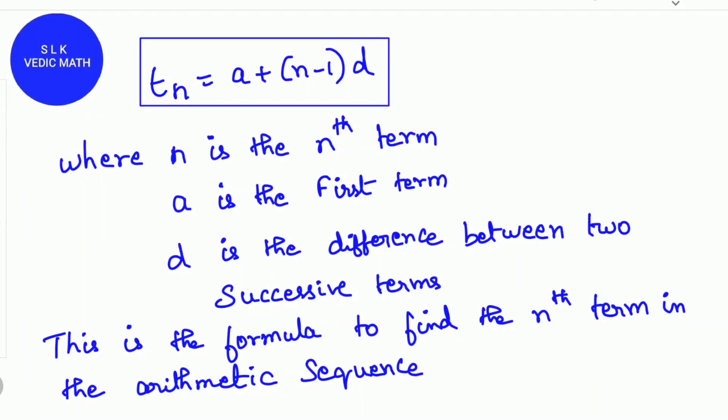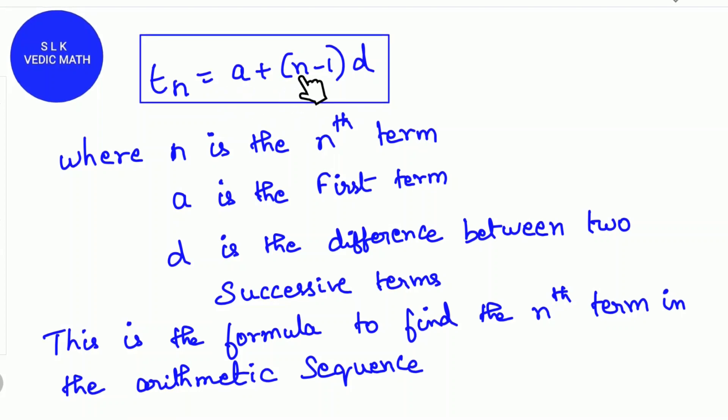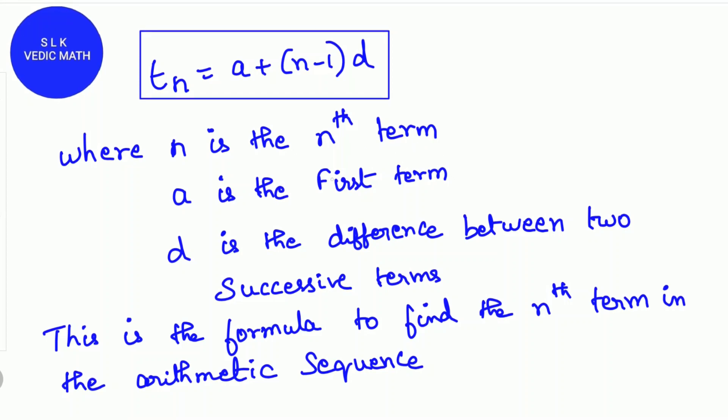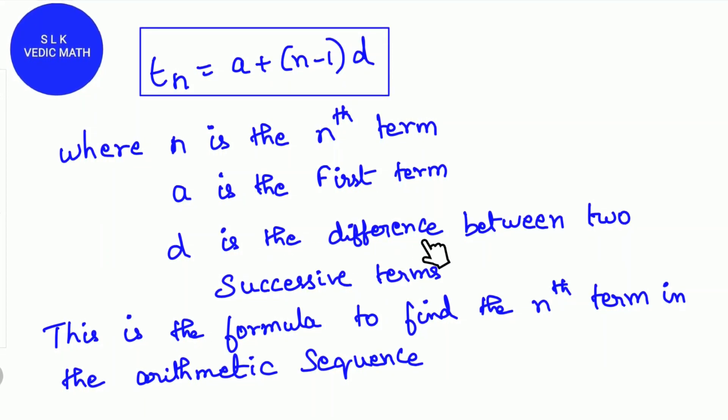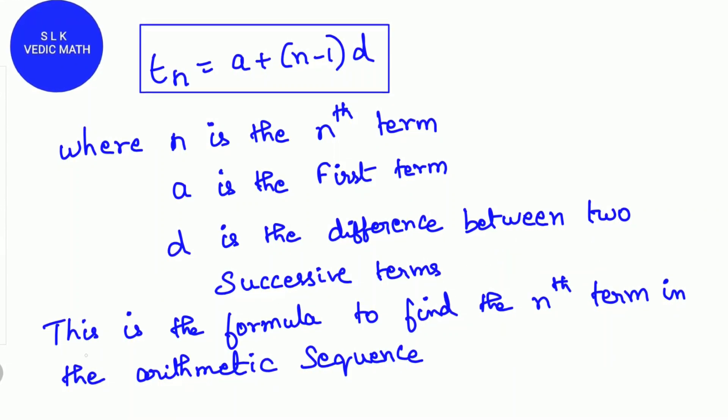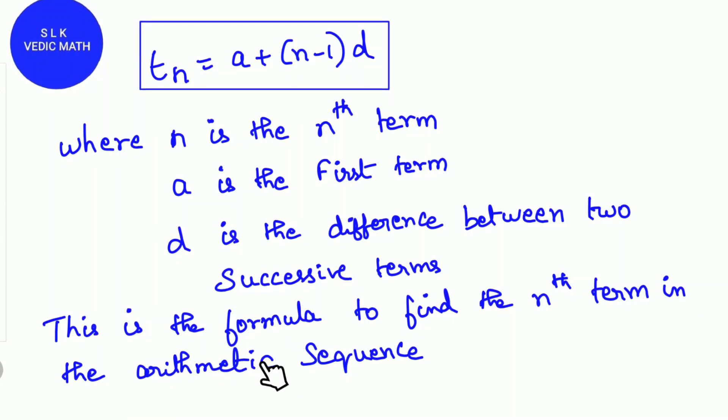This is the formula: Tn equals a plus (n-1) into d, where n is the nth term, a is the first term and d is the difference between two successive terms. This is the formula to find the nth term in the arithmetic sequence.